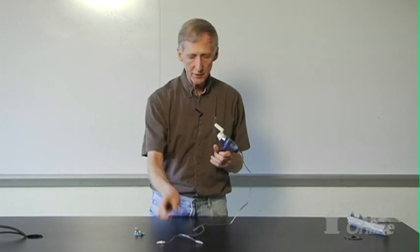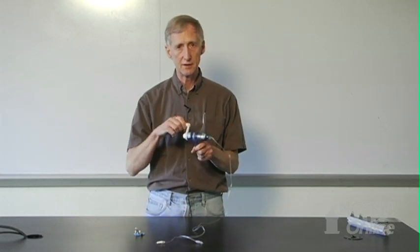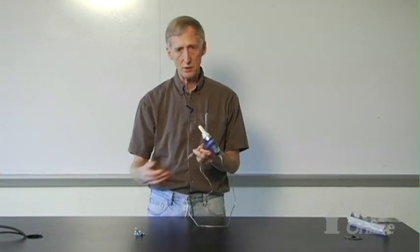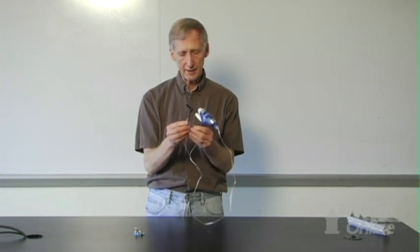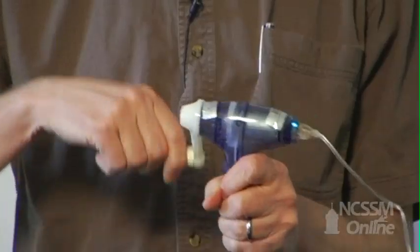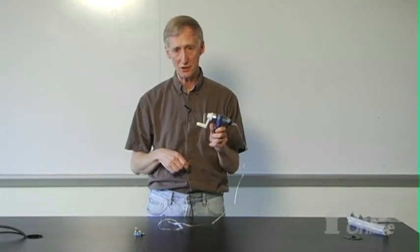So if, for example, there is nothing connected to the circuit, this is very easy to turn. If I have the light bulb, it's moderately easy. And if I connect it together, it's very hard to turn.